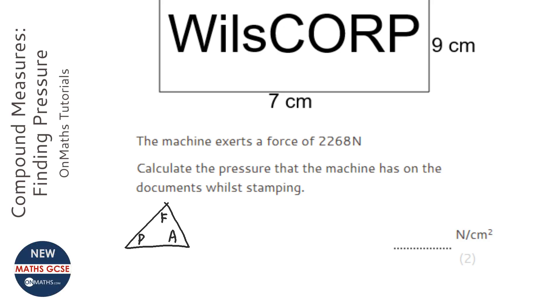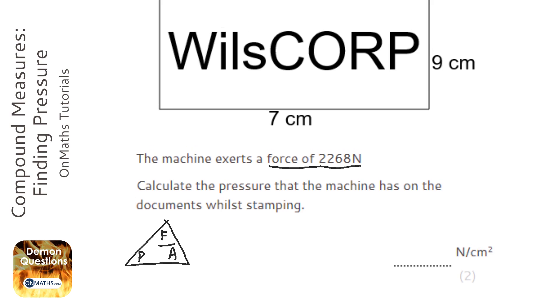And we're asked for the pressure, so it's going to be force over area. Now it's given us the force in newtons there, and we can work out the area. So to work out the area we just do 7 times 9.